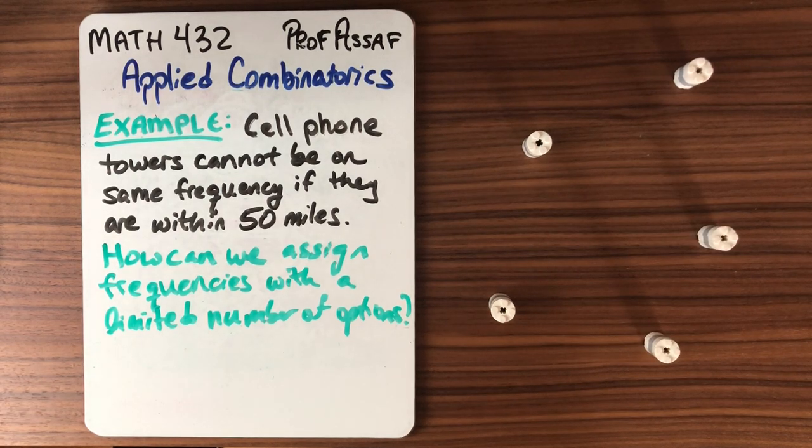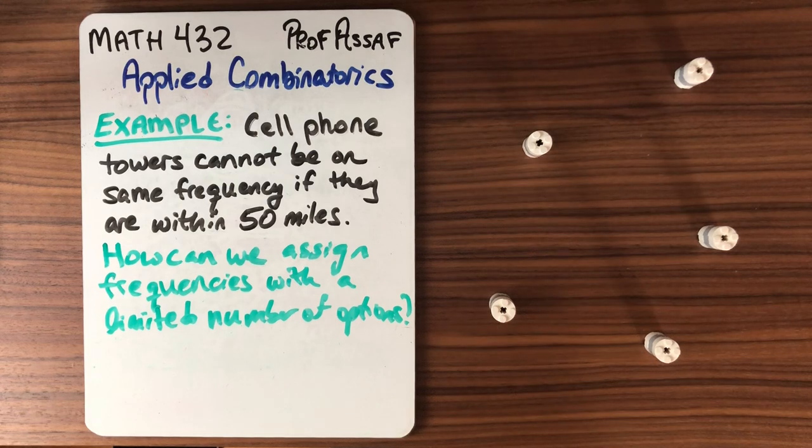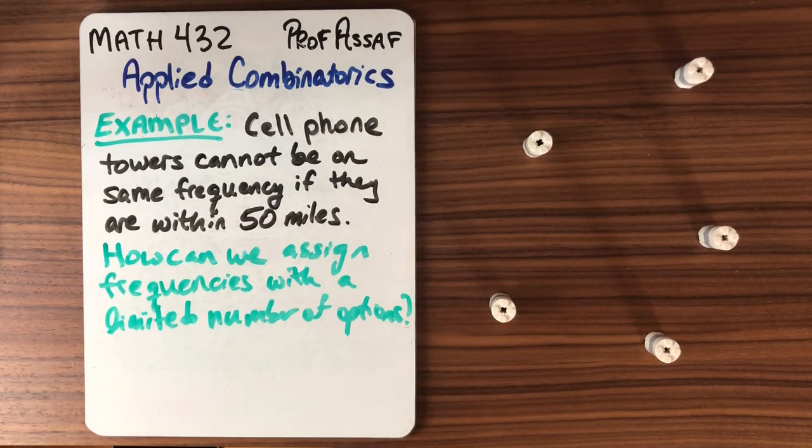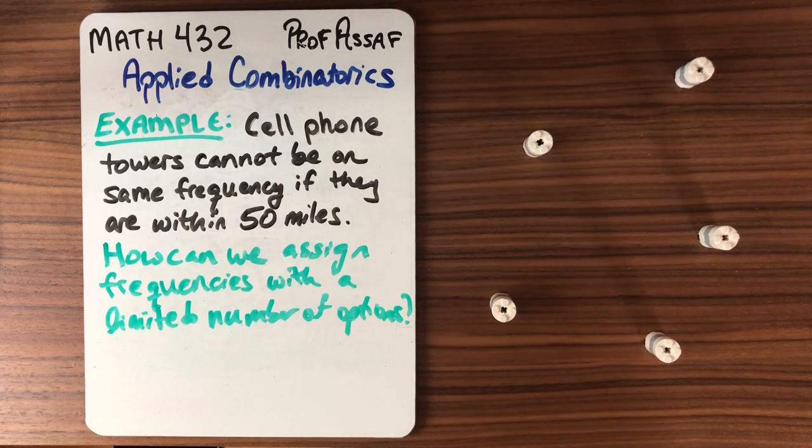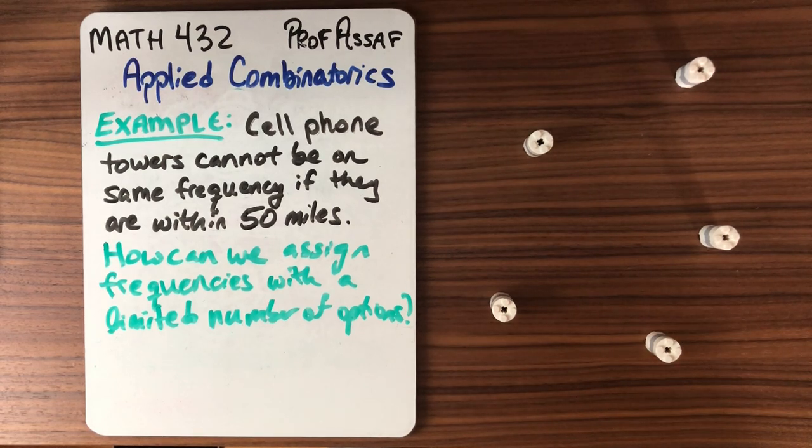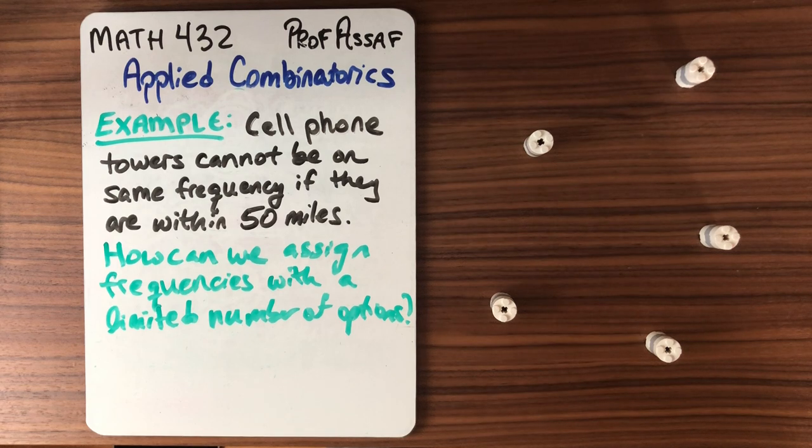Now in order to work properly, any two towers that are close together have to be on different frequencies. So we want to ask ourselves how can we set the frequencies of the towers so that we don't have a problem with two towers being close together having the same frequency?